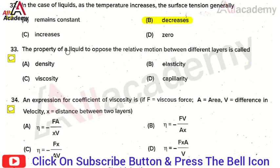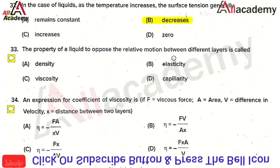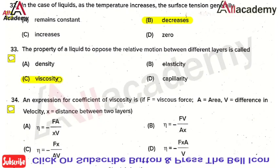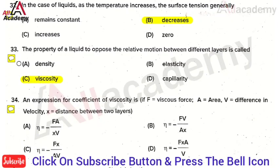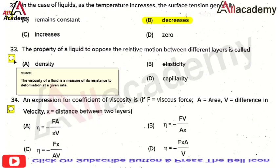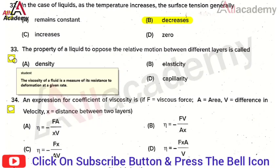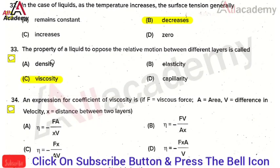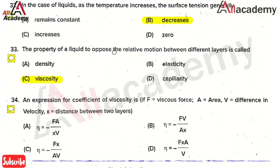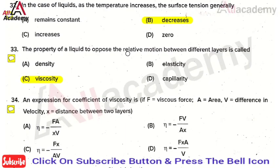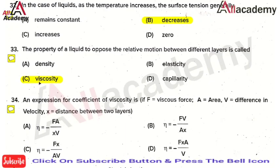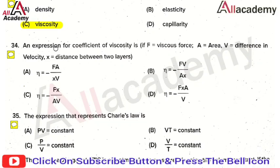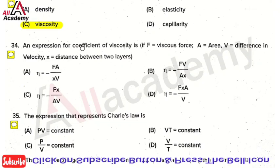The next question: the property of a liquid to oppose the relative motion between two different layers is called — the right answer is viscosity. Viscosity is the resistance to motion or resistance to deformation at a given rate for a fluid. Since it opposes relative motion between layers, the right answer is viscosity.